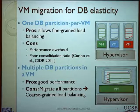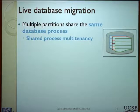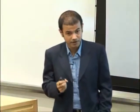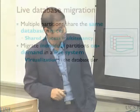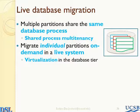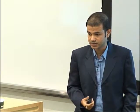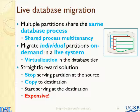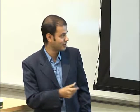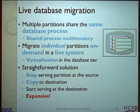What you'd ideally want is a world where you have only the database process running on bare metal, with a bunch of tenants or database partitions sharing the same database process — what's called shared process multi-tenancy in the database literature — and you'd want to migrate individual partitions on demand in a live system. What VMs allow you to do for operating systems, I'm going to allow you to do the same functionality in the database tier. You can view this as virtualization in the database tier itself. Another straightforward solution is to stop the database at the source, migrate it over to the destination, and then start serving it — what I call the stop-and-copy technique.